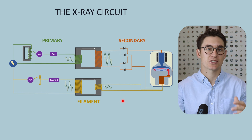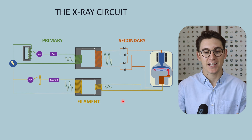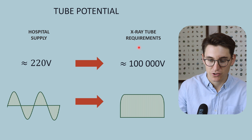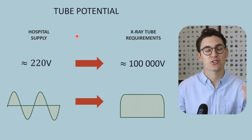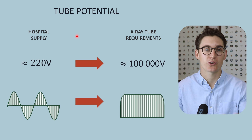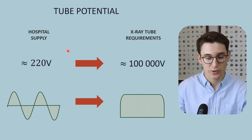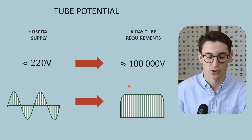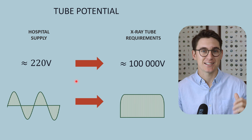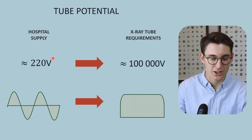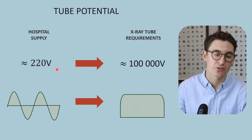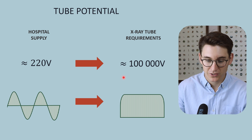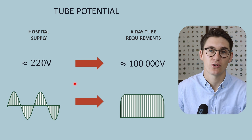The x-ray circuit serves multiple functions, and the major thing it has to overcome is the difference between hospital electricity supply and x-ray tube requirements. The electricity supply to the hospital is inadequate to create x-rays. The first issue is its low voltage — depending on your country, it's about 220 volts — but we need voltage in the order of kilovolts, 50 to 100 times the hospital supply.